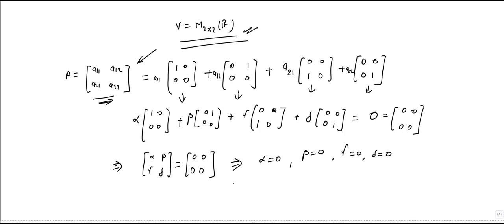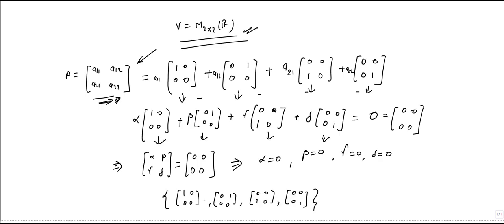That means these matrices are linearly independent. Any 2×2 matrix can be generated by these four matrices, and they are linearly independent. Therefore, these four matrices form a basis of the set of all 2×2 matrices.